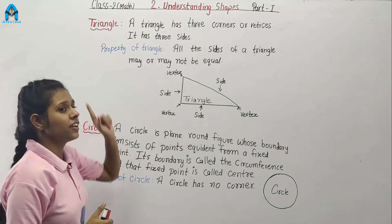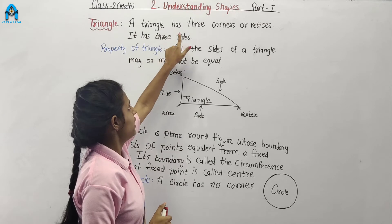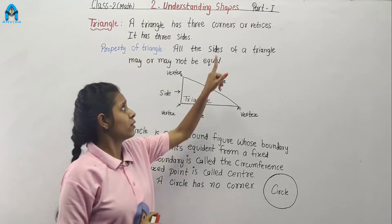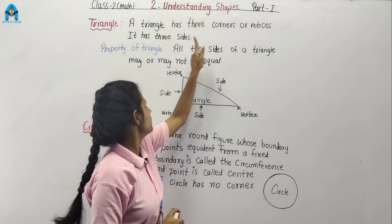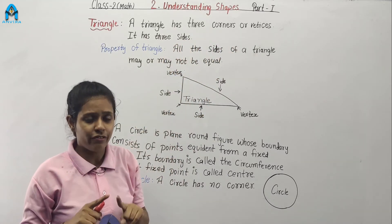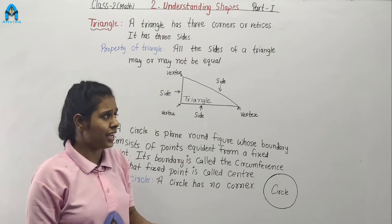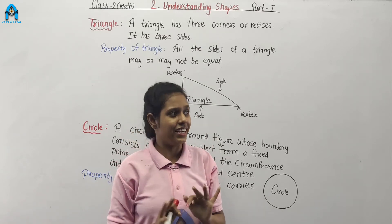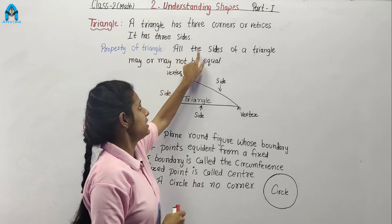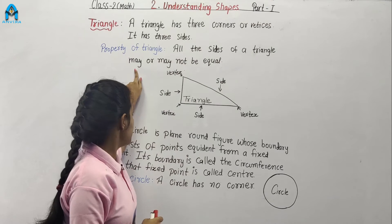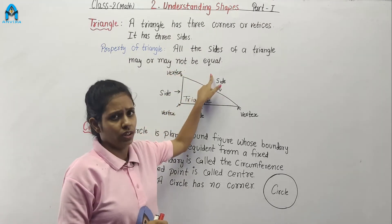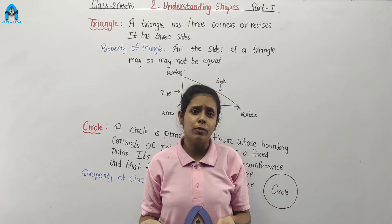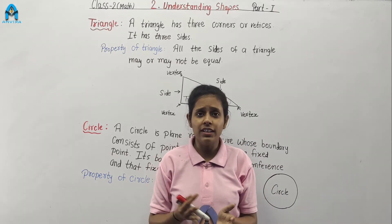Next shape is triangle. A triangle has three corners or vertex and three sides. The triangle has three corners and three sides. Properties of triangle: all the sides of a triangle may or may not be equal.